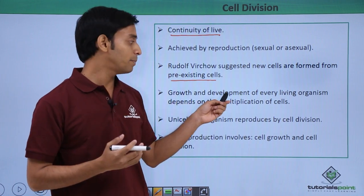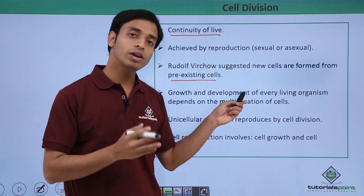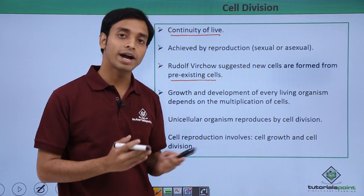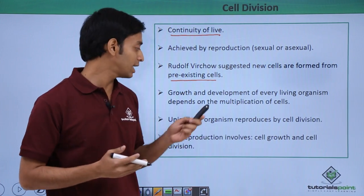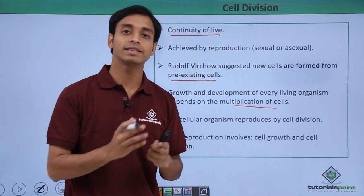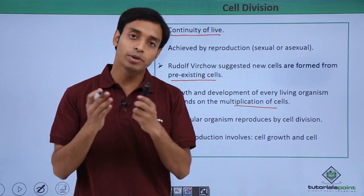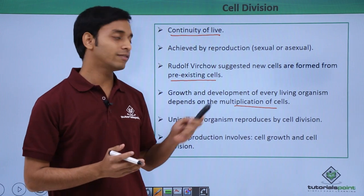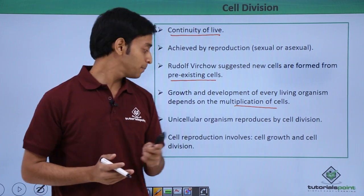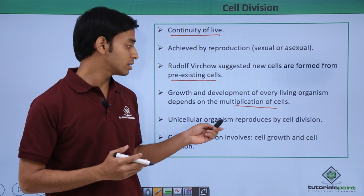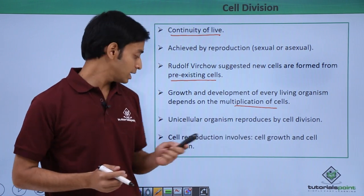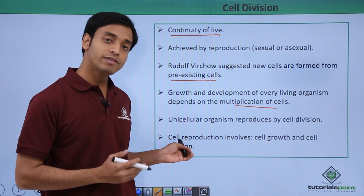Growth and development of all living organisms takes place due to the multiplication of cells. Cells multiply and divide, and because of that the growth and development of all organisms takes place. Unicellular organisms also reproduce by the process of cell division.